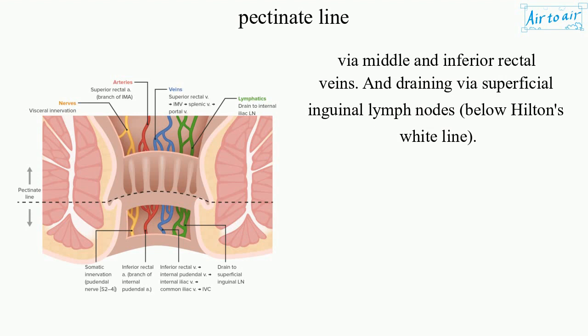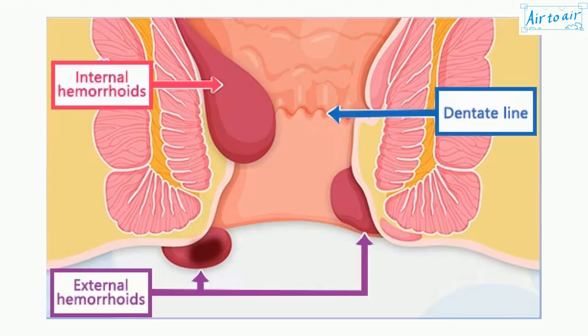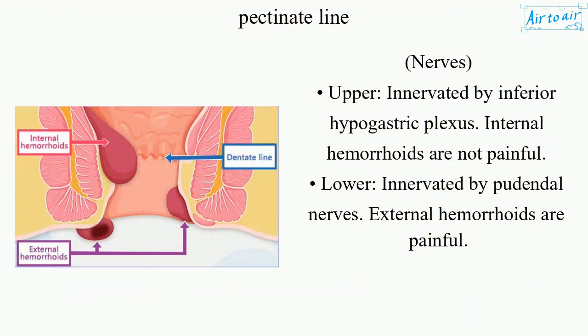Below Hilton's white line. Nerves: Upper — innervated by the inferior hypogastric plexus; internal hemorrhoids are not painful. Lower — innervated by the pudendal nerves; external hemorrhoids are painful.